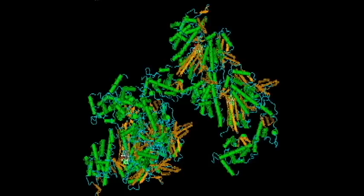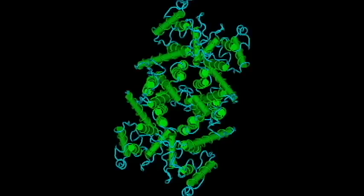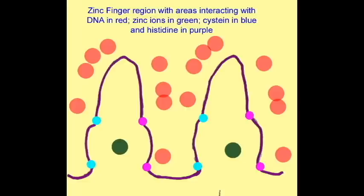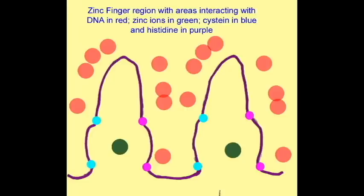Zinc ions can anchor an amino acid chain at four separate points. Some of the proteins which use zinc are transcription factors, and form a huge family of proteins known as zinc finger proteins, whose loop structures bind ions of zinc and interact with DNA.